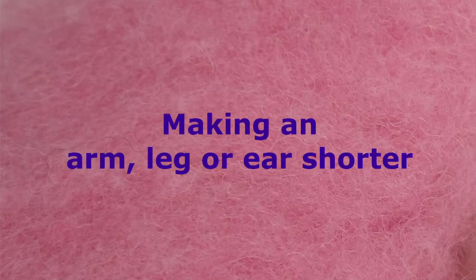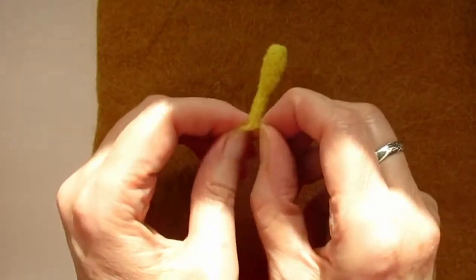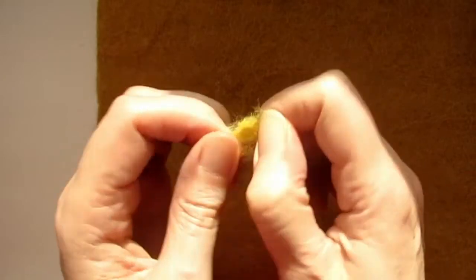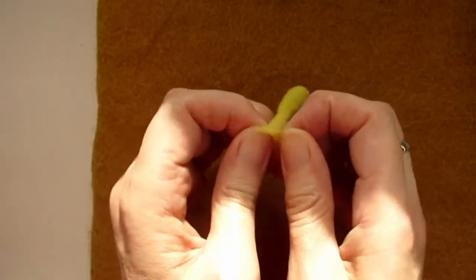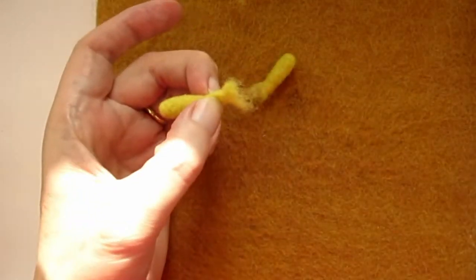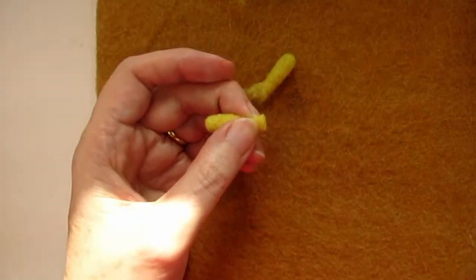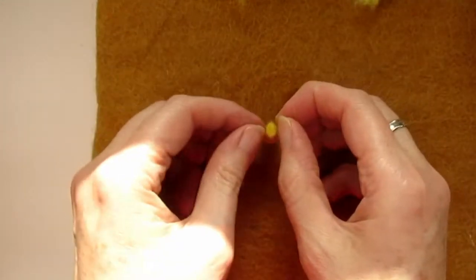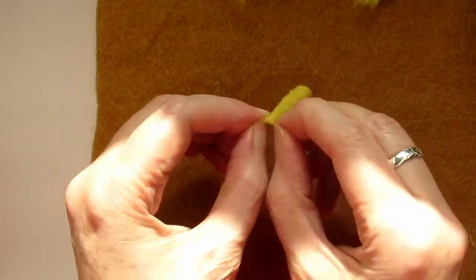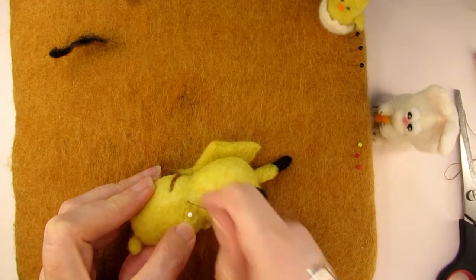So what do you do if an arm or leg or ear for that matter is too long? Take a firm hold of the fluffy end, pulling the end apart and tease the wool out so that it's unfelted again. This looks a bit brutal and messy but it really does work. If it's too felted to do this and you need it to be a lot shorter, then you can cut some off with scissors. Just make sure that you leave it a tiny bit longer than you need so that you have some loose fibers to attach it with. If you think of wool as a sculpting material and you were sculpted in clay, you just remove some clay if you had too much. So don't worry, you can neaten it up afterwards.